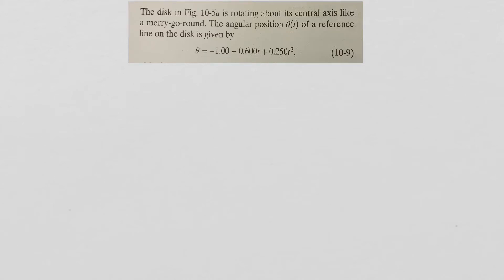Let's look at an example of deriving angular velocity when we know the position function as a function of time. We have a disk rotating about its central axis, and the angular position θ is given by the function -1 - 0.6t + 0.25t².